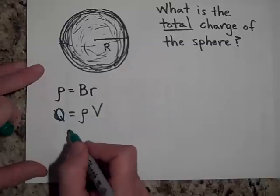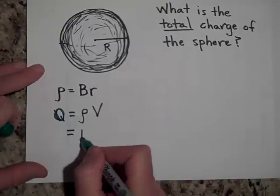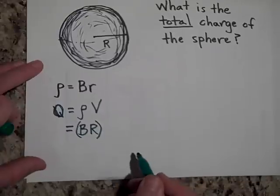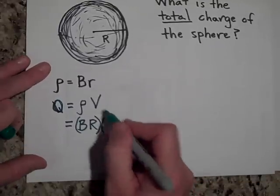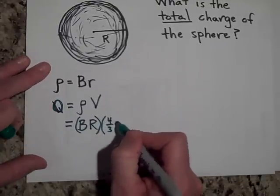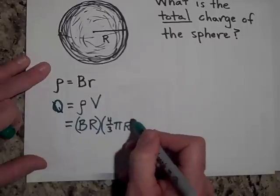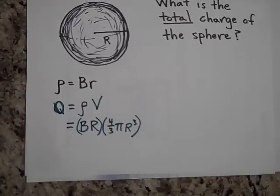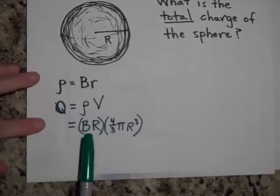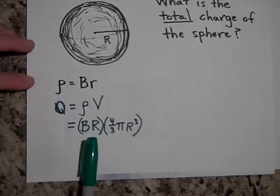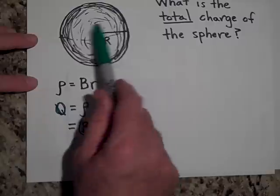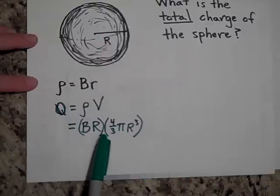And then go, the rho would be beta capital R for the whole thing times the volume four thirds pi R cubed. I can't do that because then that's exactly what you would get if the charge density were not varying, but it was consistently this value, B times capital R.